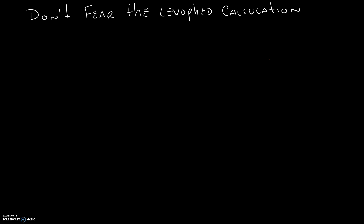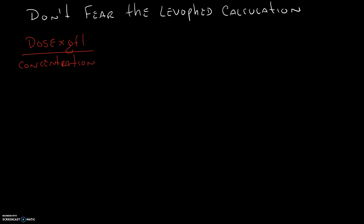So let's go ahead and get started. First let me show you the long way of doing the calculation, because it's important that you understand how the calculation is done in the first place. So for any medicated drip, our calculation is dose times the drip set all over the concentration. The easier way of doing this is to realize that there are two constants in this equation: the drip set and the concentration. These never change for a Levofed drip.